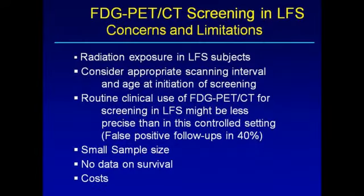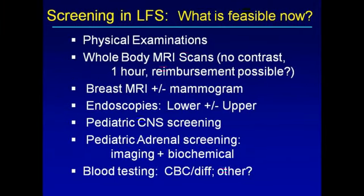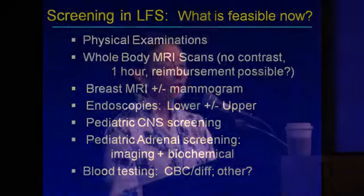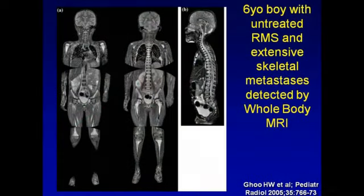We did a small study using FDG PET screening because it is used in the evaluation of many tumors these people get. In 15 patients, we found three cancers — surprising, though these are prevalence screens, so the first time you look at any population you find everything you didn't realize was there. The problem was that FDG PET uses a lot of radiation, so it could prove the principle but wasn't going to be widely adopted. We only did it to show that you could actually do something in this group of people who otherwise simply worry and wait.